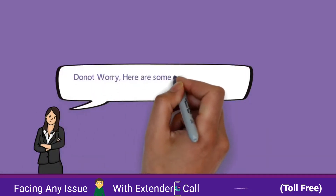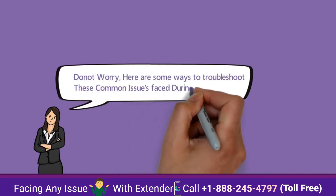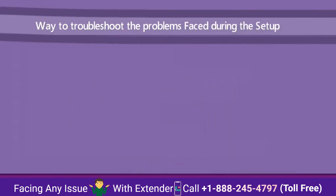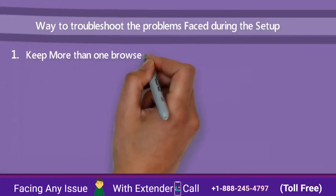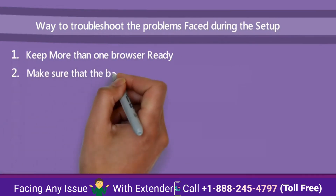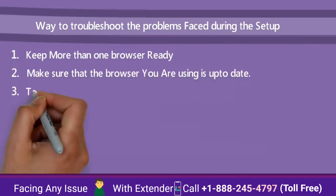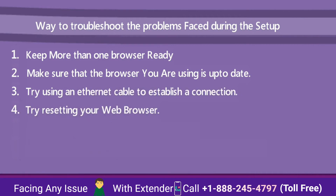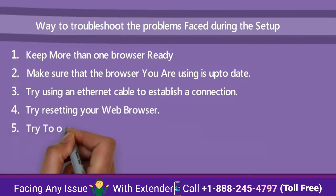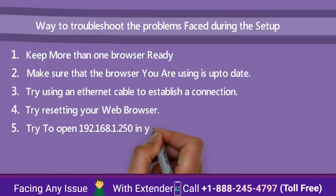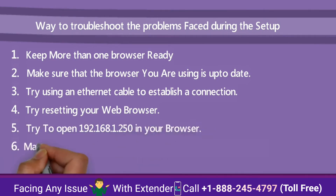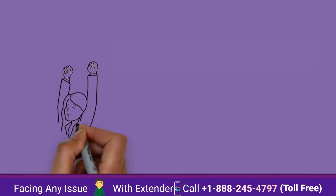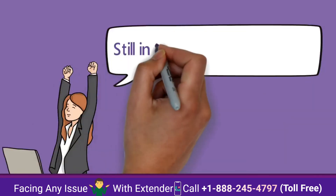Do not worry — here are some ways to troubleshoot these common issues faced during setup. Keep more than one browser ready. Make sure that the browser you are using is up to date. Try using an Ethernet cable to establish a connection. Try resetting your web browser. Try to open 192.168.1.250 in your browser. Make sure that the IP address you are connected to is set to static.